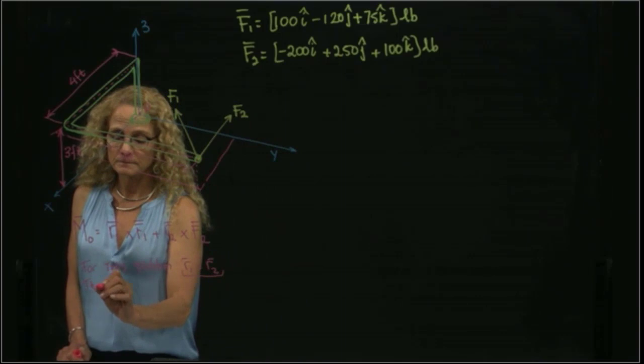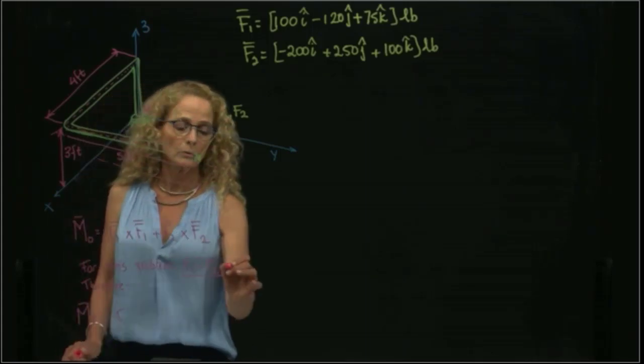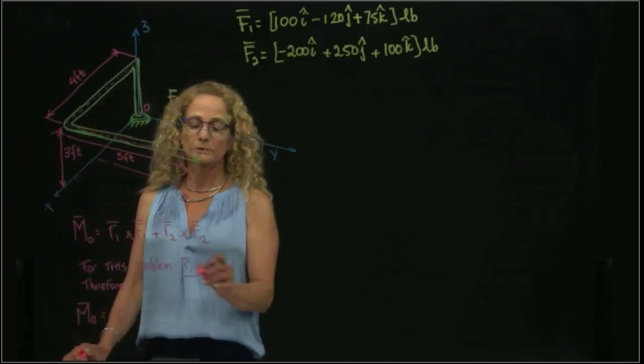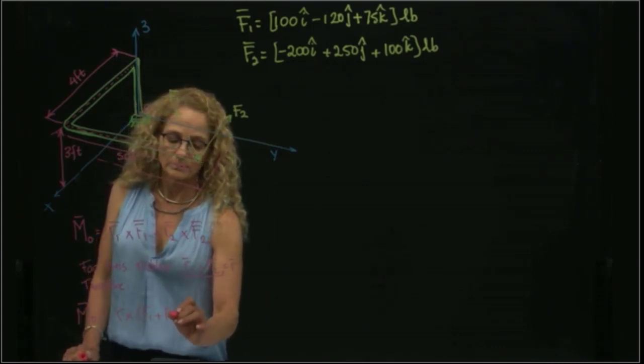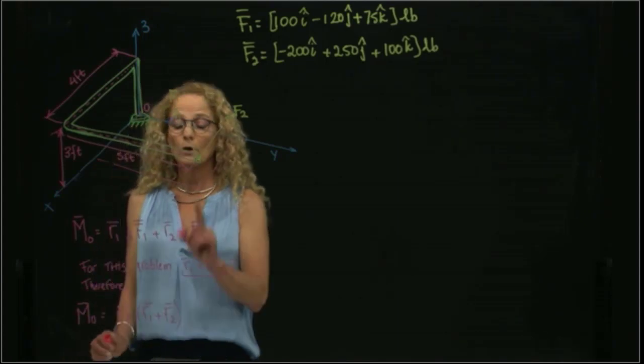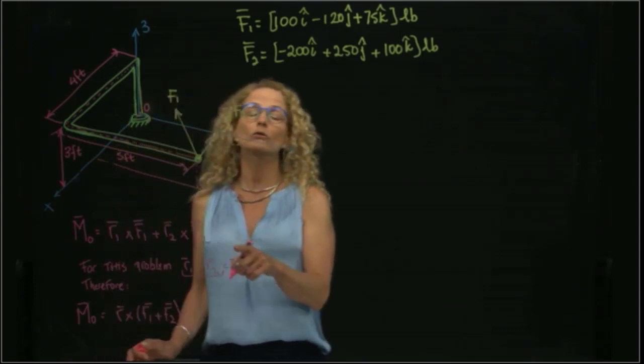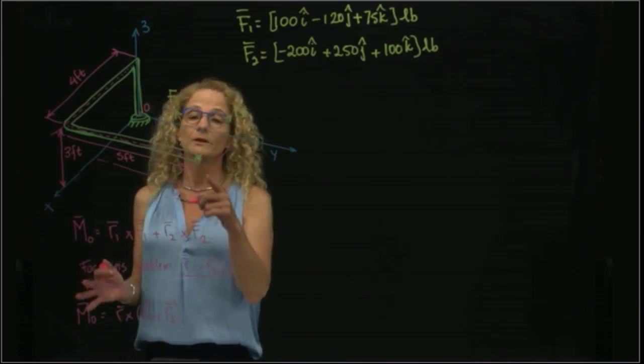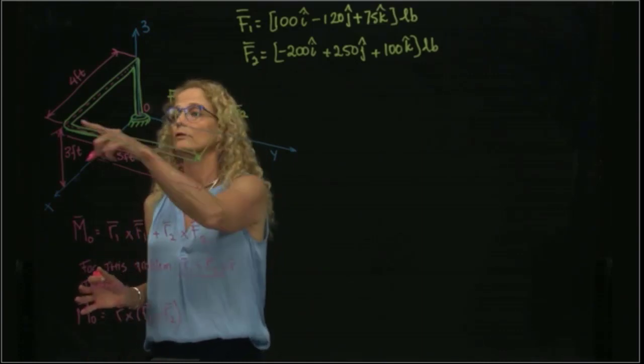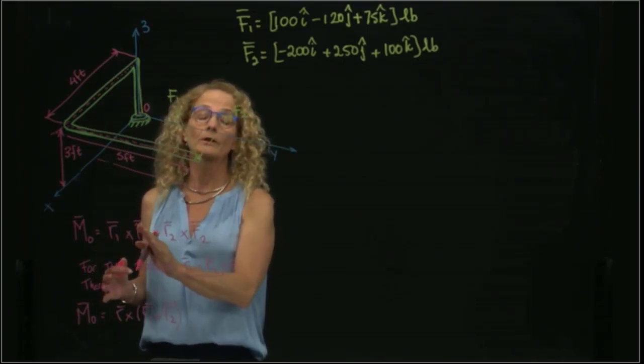And therefore, we can write that the moment with respect to O will be equal to R cross (F1 plus F2). Everything has a vector. This is only because R1 and R2 are the same. If R1 and R2 are different, for example if F2 is located at another point of this pipe, then we have to do two separate cross products.